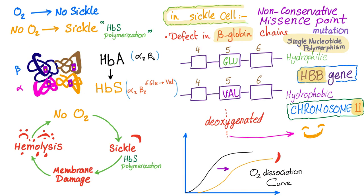When there is oxygen, no sickling. When there is no oxygen, sickling occurs. Sickling is due to hemoglobin S polymerization — hemoglobin S polymerizes when there is no oxygen. The defect is a non-conservative missense point mutation, or single nucleotide polymorphism. The change is in a single nucleotide, which yields a different amino acid. Instead of the normal glutamic acid, we now have valine at position number 6.